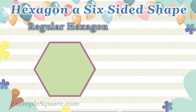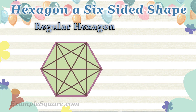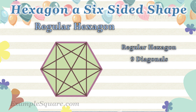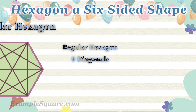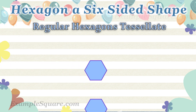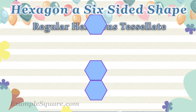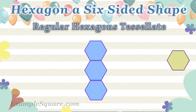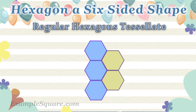A regular hexagon has nine diagonals. Diagonals are the lines joining the non-adjacent vertices. Regular hexagons can be used for making tessellations, as they fit together without any gaps to tile the plane.